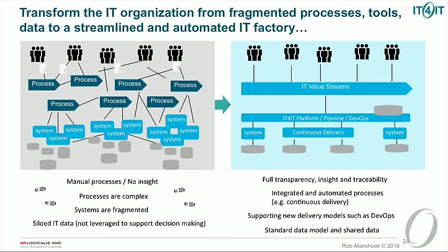If you understand that this is already happening in your organization — only fragmented and in different places — then at least let's build a vision of where you want to go. Let's say the current way of working is fragmented, and let's build a picture of how we foresee the new IT organization to look: focusing on value streams, integrated systems, more automation, the ability to flow demand through to production, and support for continuous delivery and DevOps.